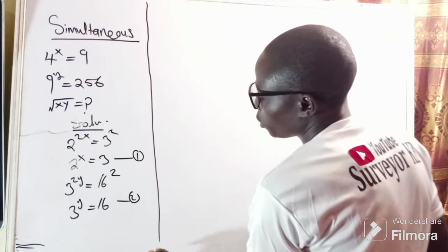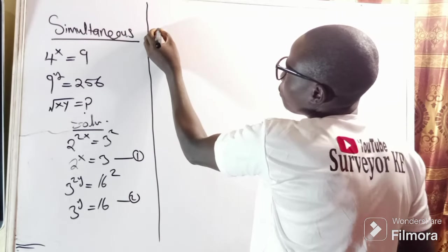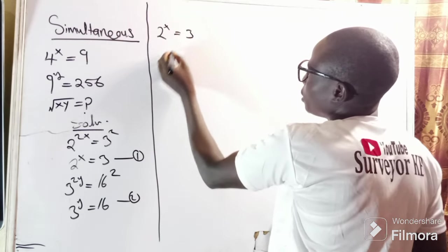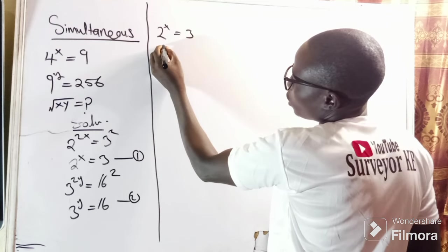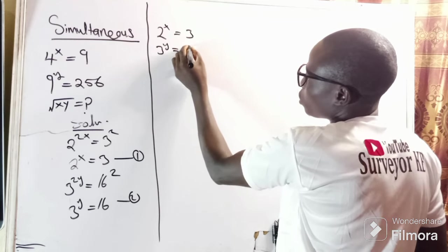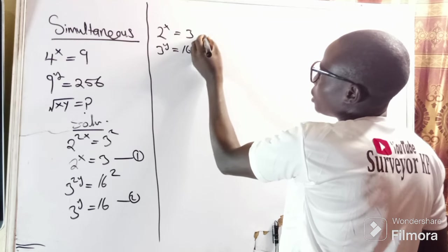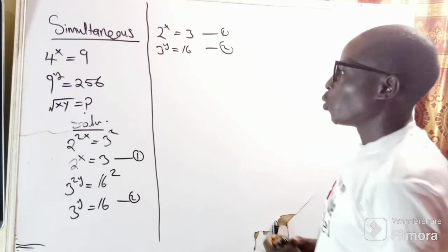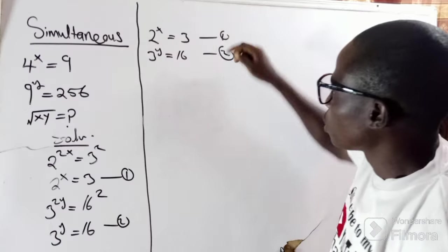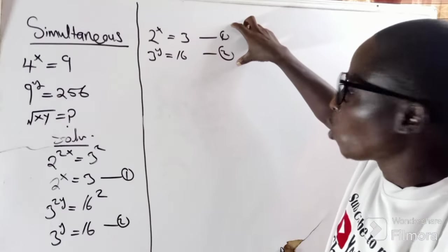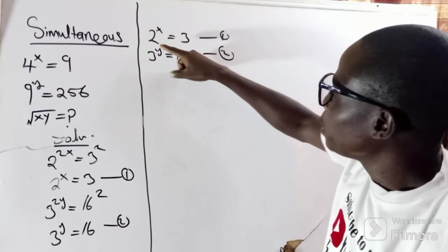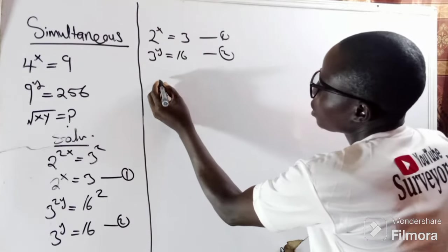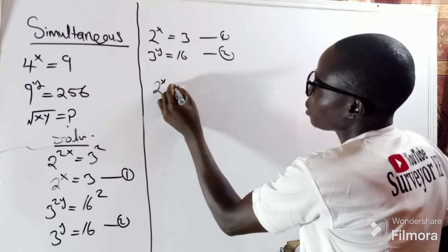Let me divide the board. So I have 2 to the power of x equals 3 — that is equation 1 — and 3 to the power of y equals 16 — that is equation 2. Having gotten these, let me start from the first equation.